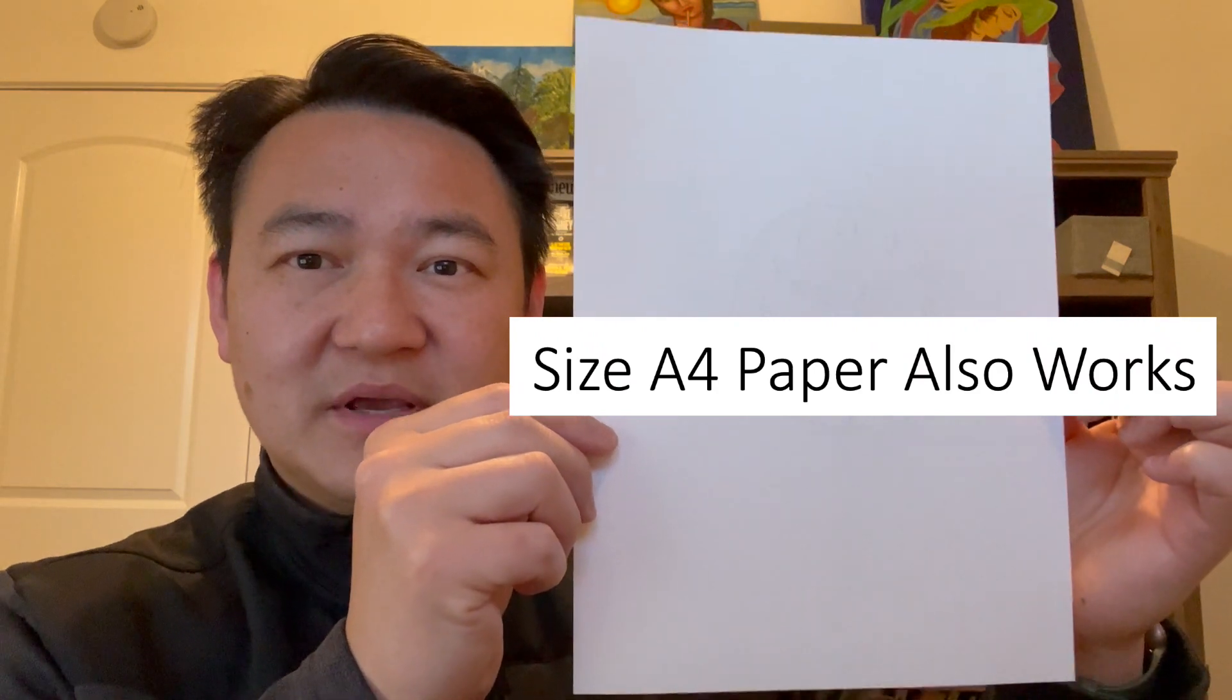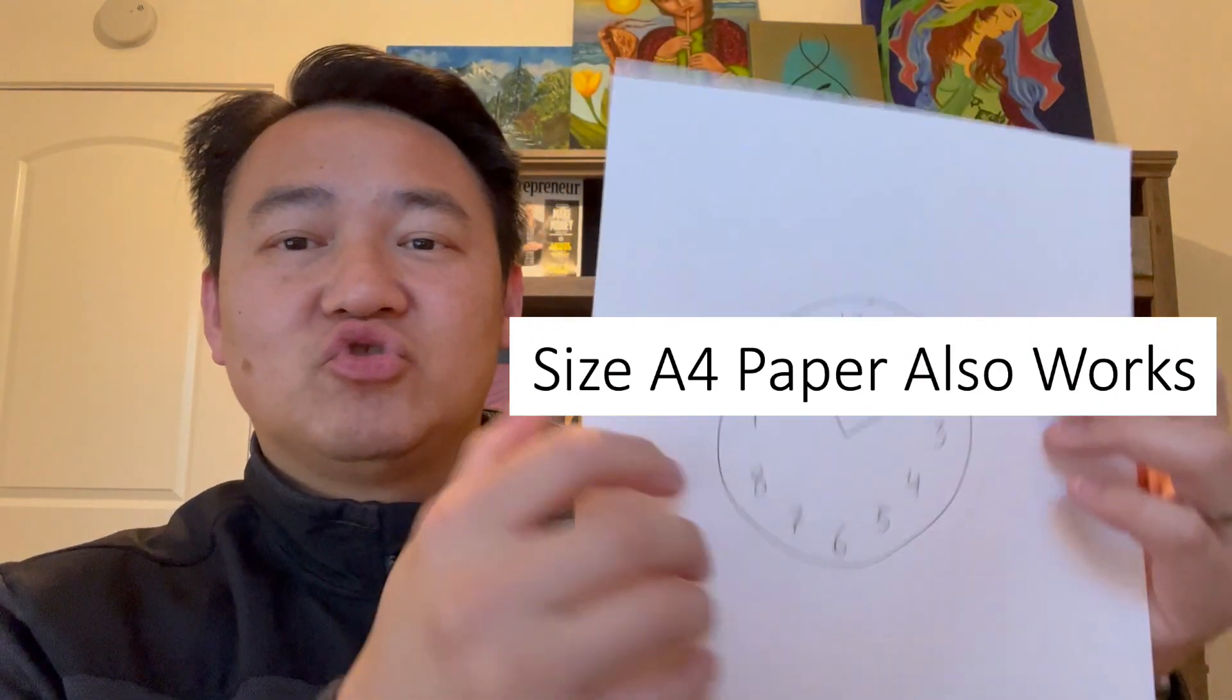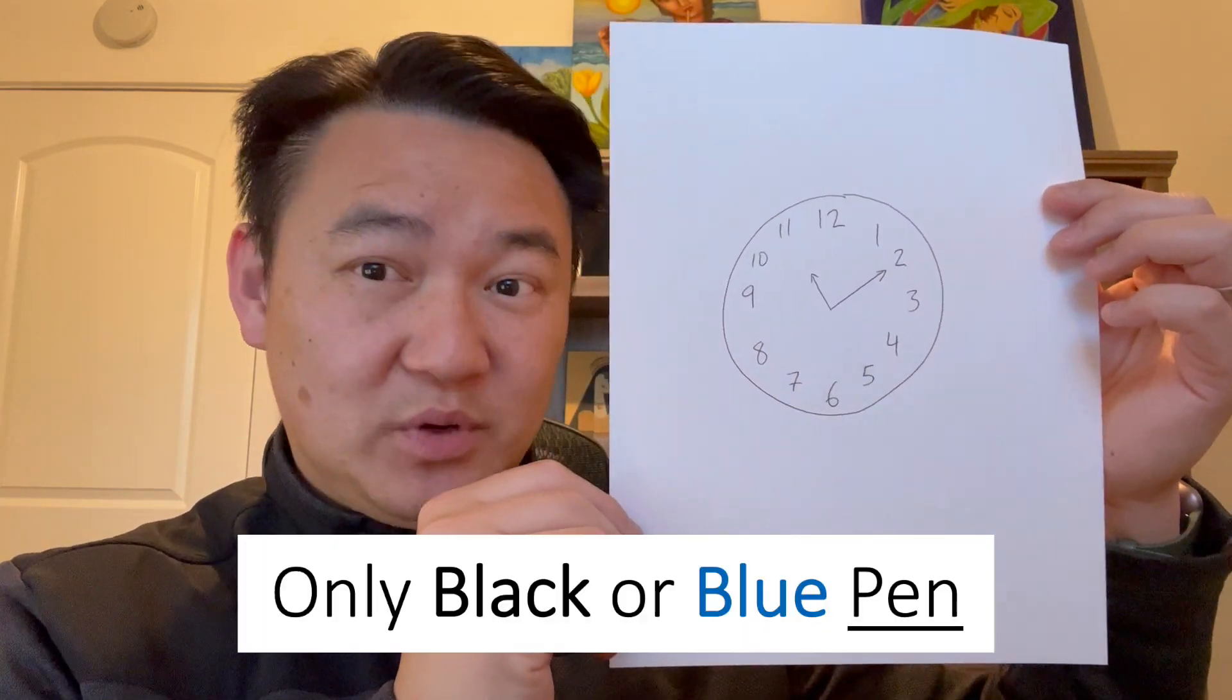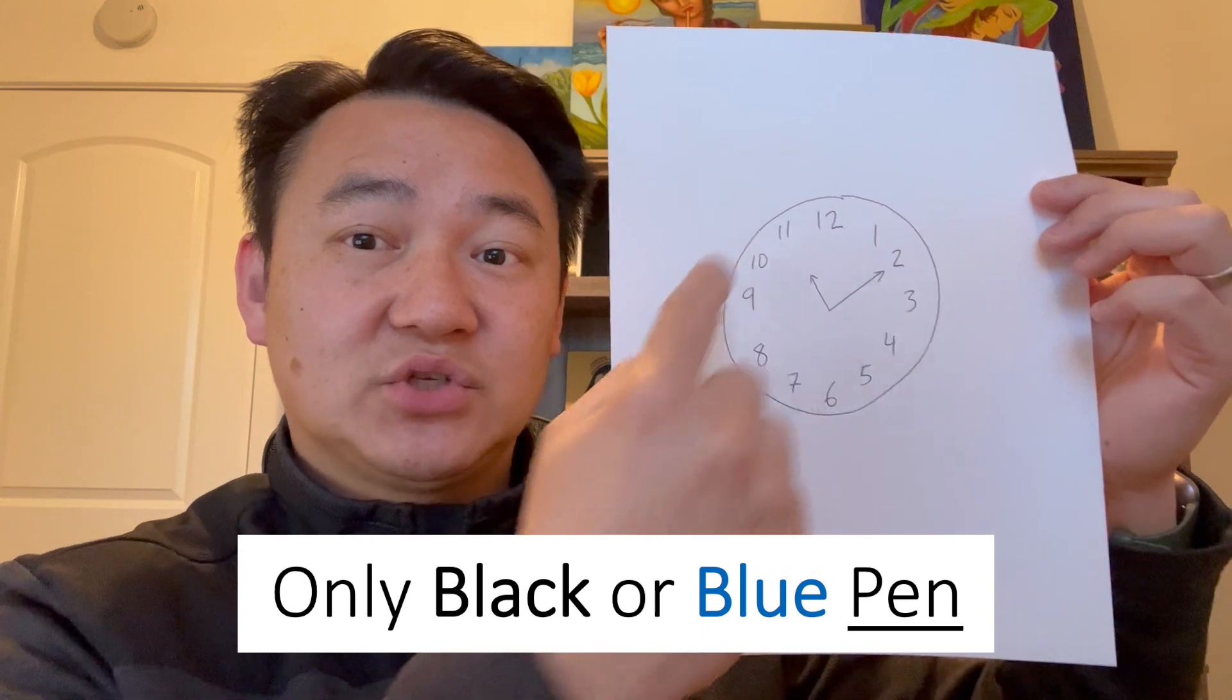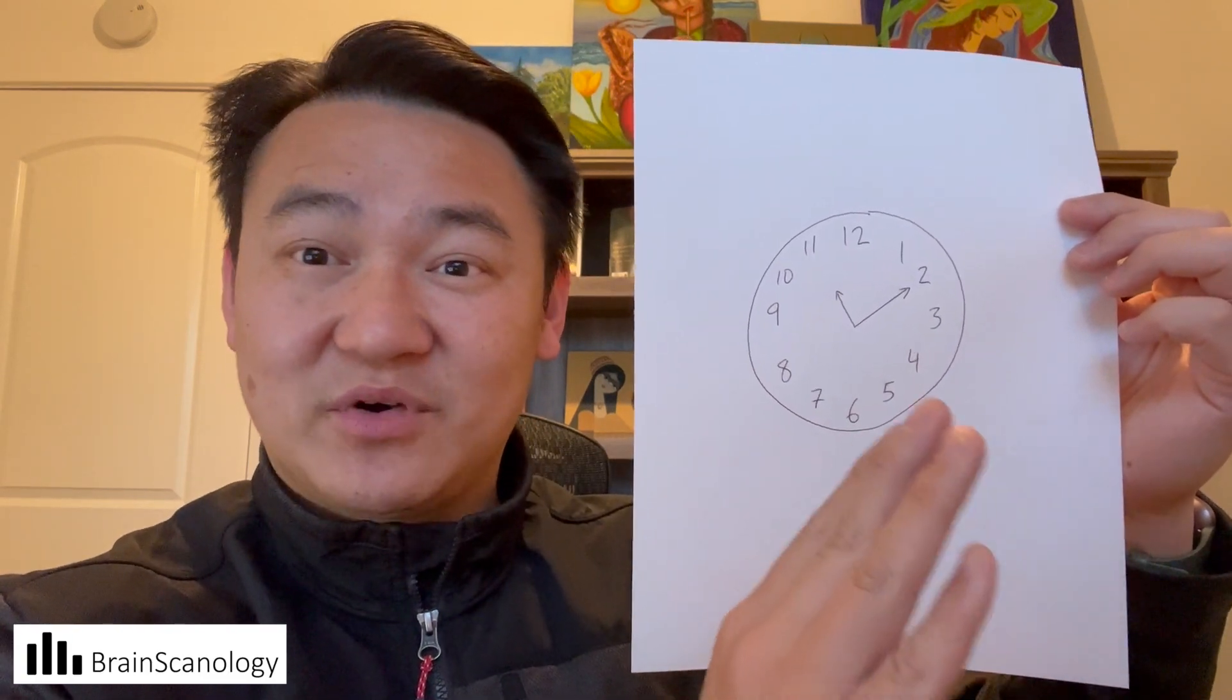You will need a piece of paper that is standard printer paper, eight and a half inches wide by 11 inches tall. When you draw the clock, you will use a pen that's either black or blue ink, and you will draw a circular clock that has 12 numbers and two hands. The hands should point to 10 minutes after 11.